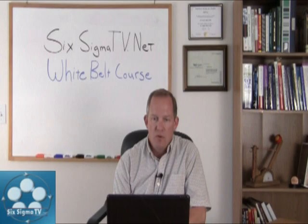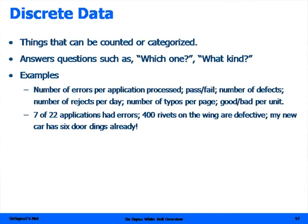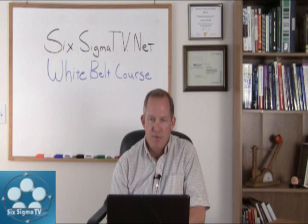Here are some other examples of discrete data — things that can be counted or categorized, answering the questions which one, what kind, etc. For example: number of errors per application, seven out of 22 errors had applications, 400 rivets on the wing are defective, my new car has six door dings already. Those are all examples of discrete data.